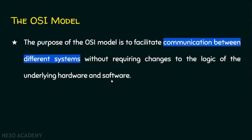In terms of hardware they may be different, and in terms of software they may also be different. So two different systems are going to communicate with each other with the help of guidelines provided by the OSI model, so that we don't require any changes to the logic of the underlying hardware and software.